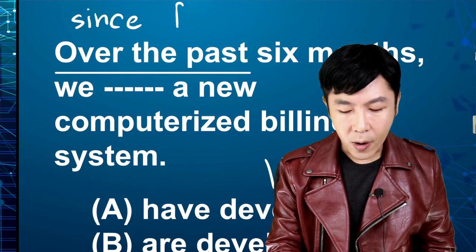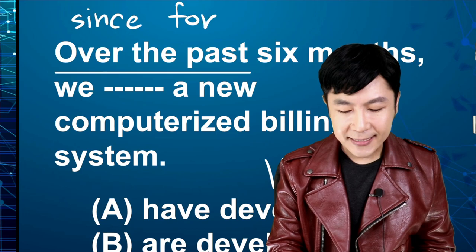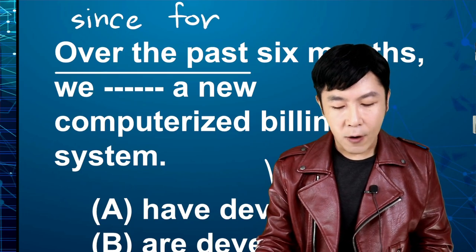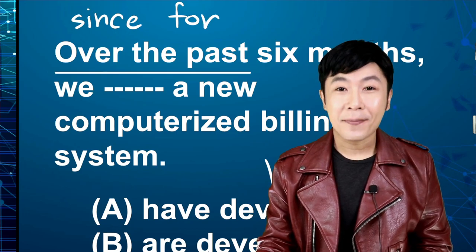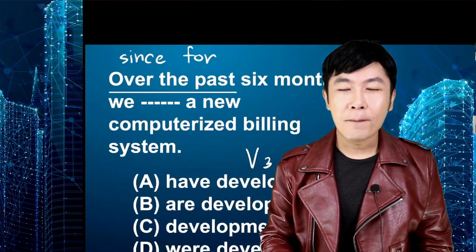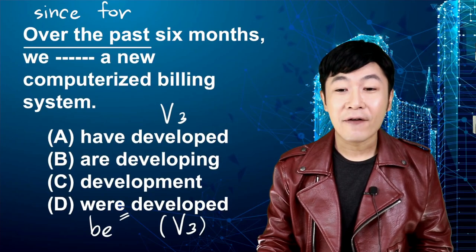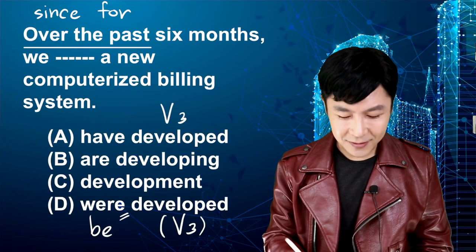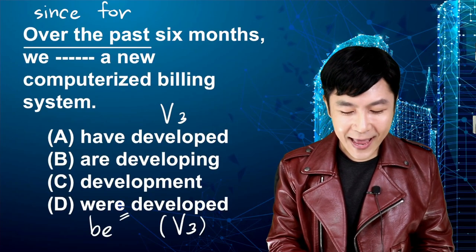Key time markers to look for: 'since,' 'for,' 'over the past.' If you find these alongside a verb 3 form, it is Present Perfect.